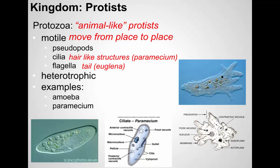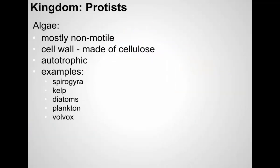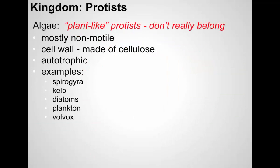They're heterotrophic, although the euglena can go through photosynthesis since it has chlorophyll. Then there were the plant-like protists — things like algae. Mostly they're non-motile; they don't move around. They're much like plants. They have a cell wall made of cellulose. They're autotrophs. We looked at the spirogyra — plant-like protists.